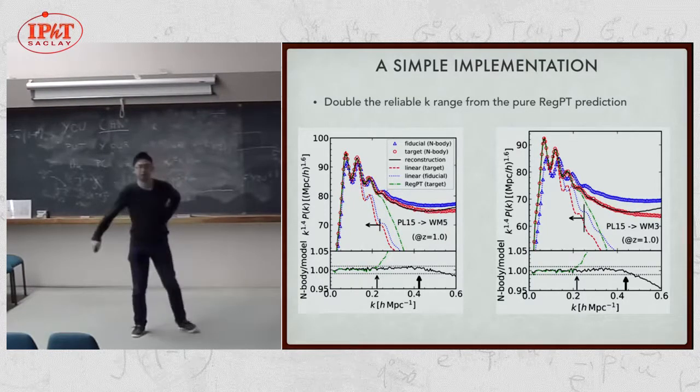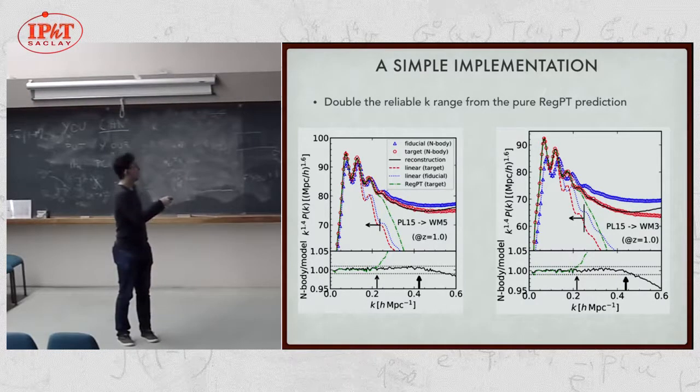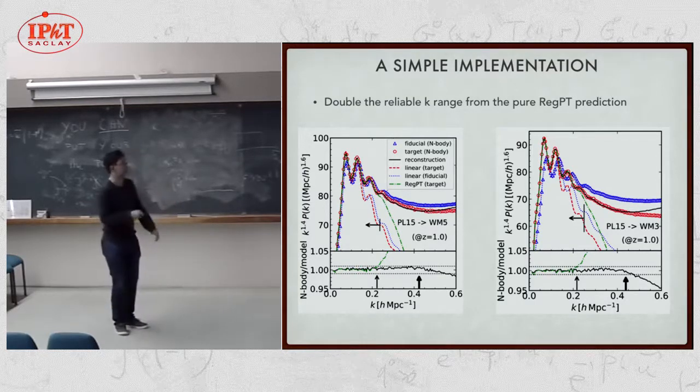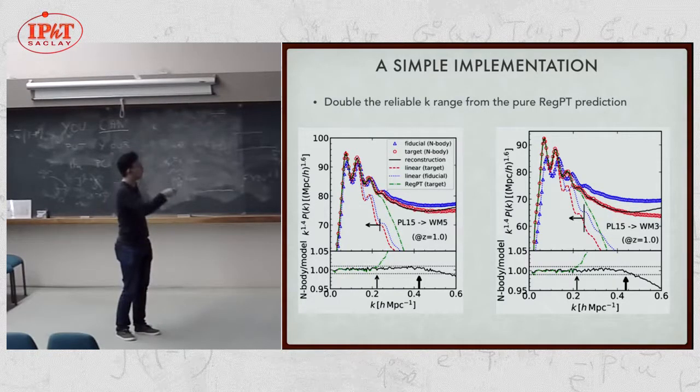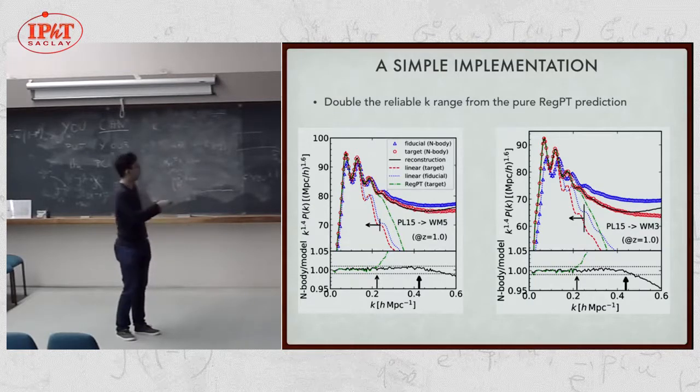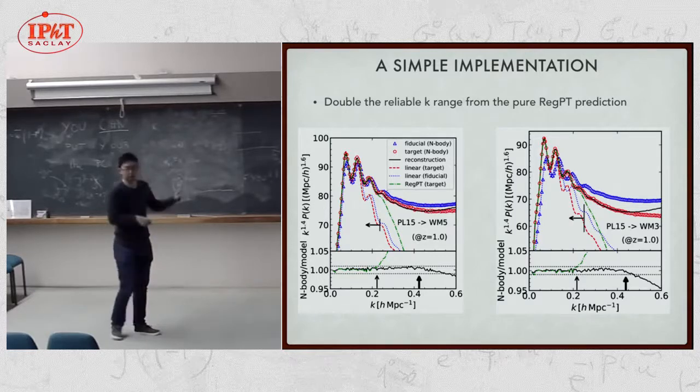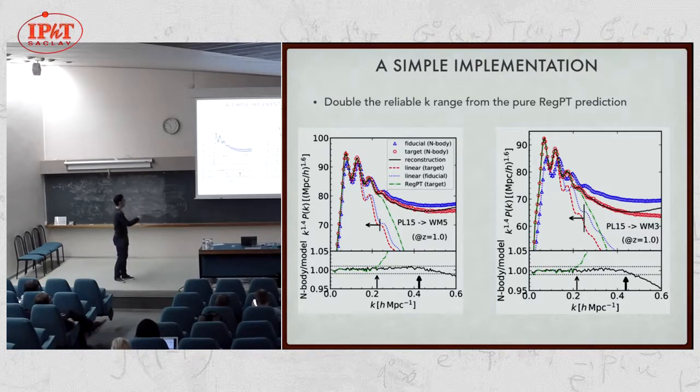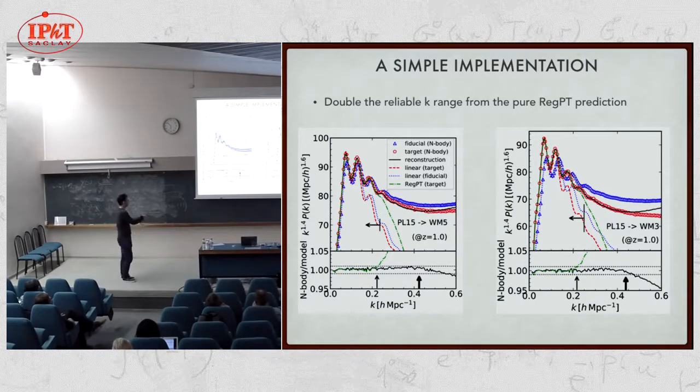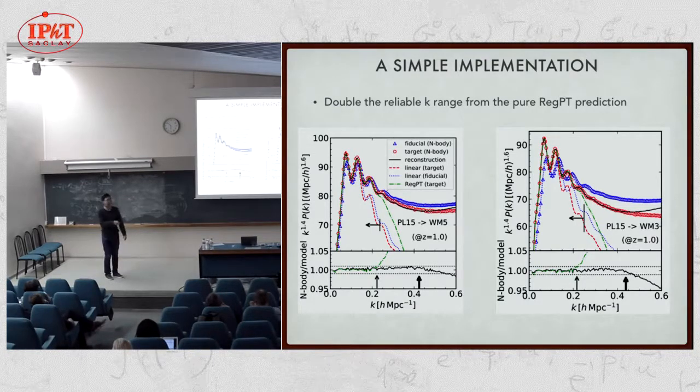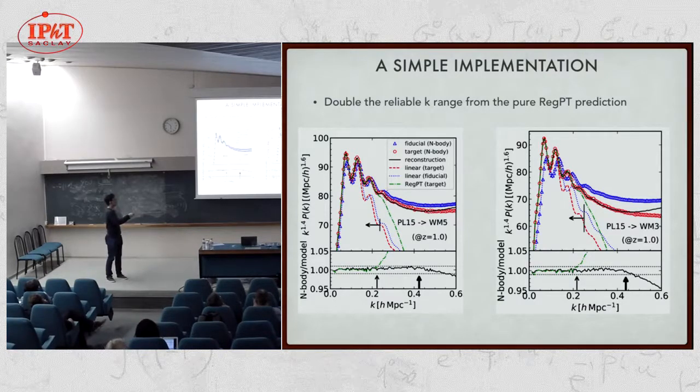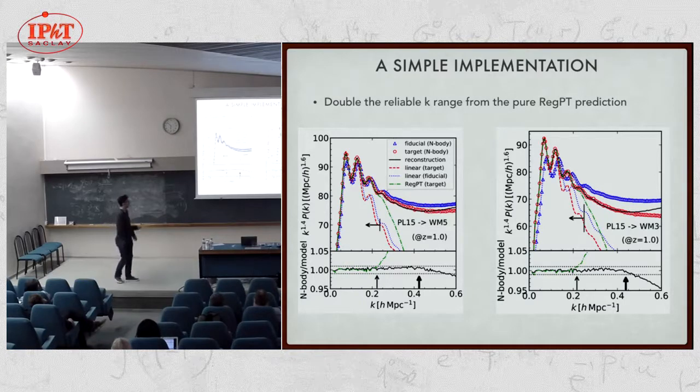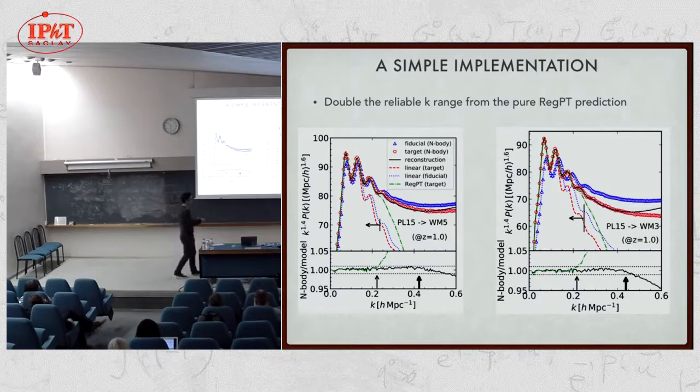Here is the result. The left panel shows what we call reconstruction from Planck cosmology to WMAP5 cosmology. The right panel shows that from the same Planck cosmology to the WMAP3 cosmology. Omega matter is a little bit different. Our starting point, the blue triangles, fiduciary Planck cosmology simulation results. Starting from this cosmology, I want to make a prediction for the target cosmology, which in this case is WMAP5 cosmology, red circles. For reference, I also show the two linear power spectra, which are these two curves in the corresponding color. The reconstruction results are shown by the solid continuous curve, which works quite well. I here show the ratio of the model to the direct simulation result. The ratio stays very close to unity up to very large wave number.